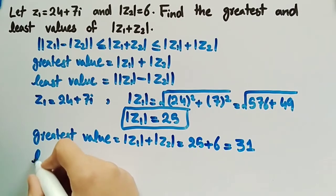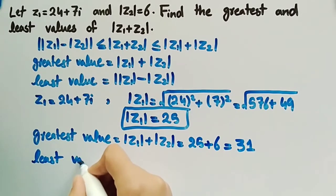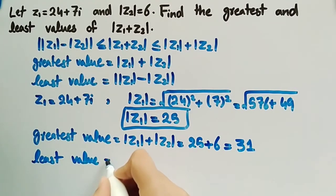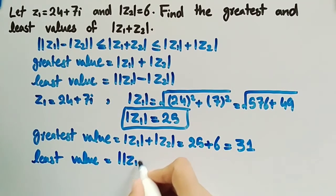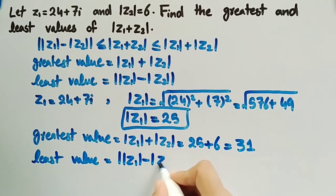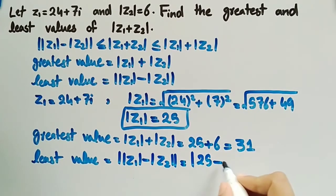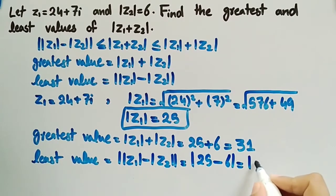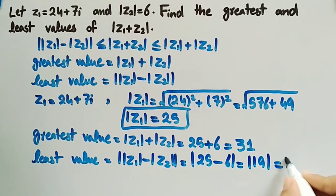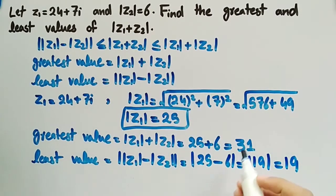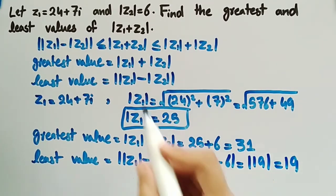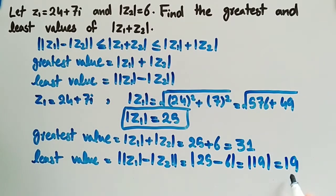The least value is equal to mod of z1 minus mod of z2, which is 25 minus 6, equal to 19. So, the greatest value of mod of z1 plus z2 is equal to 31, and the least value of mod of z1 plus z2 is equal to 19.